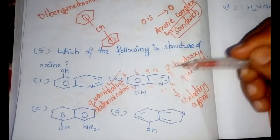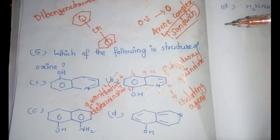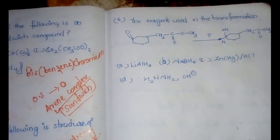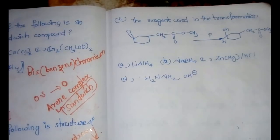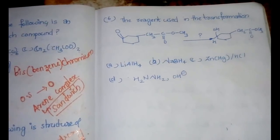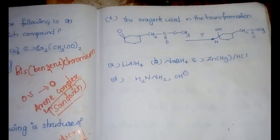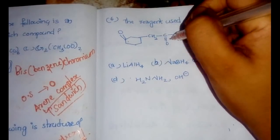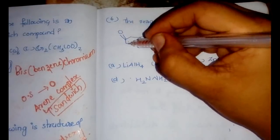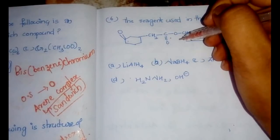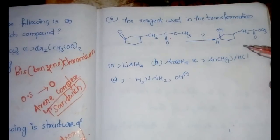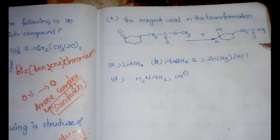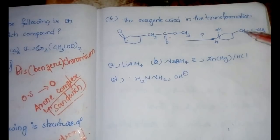So auxin is a chelating agent used for the quantitative determination of metal ions — this is really important. The next question asks: what is the reagent used in the following transformation? Carefully looking at the reactant: we have a ketone carbonyl group and an ester carbonyl group.